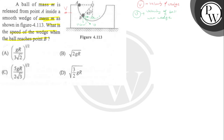So we have v·cos45 and v·sin45 as the components. One component of the ball's velocity is v·cos45, which equals V/√2. Since the wedge moves with it, there is a common velocity in that direction, which is capital V.